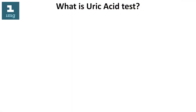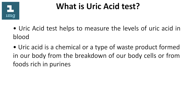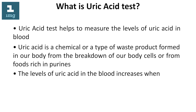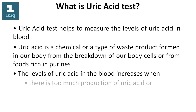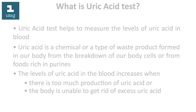What is a uric acid test? A uric acid test helps to measure the levels of uric acid in blood. Uric acid is a chemical, or a type of waste product, formed in our body from the breakdown of body cells or from foods rich in purines. The levels of uric acid in the blood increase when there is too much production of uric acid or when the body is unable to get rid of excess uric acid.